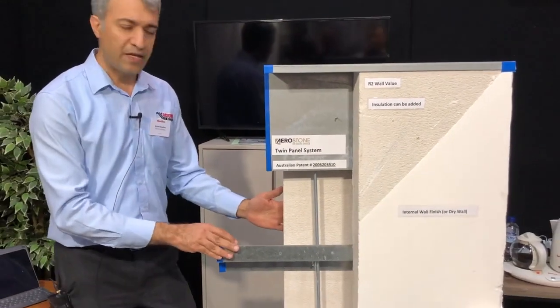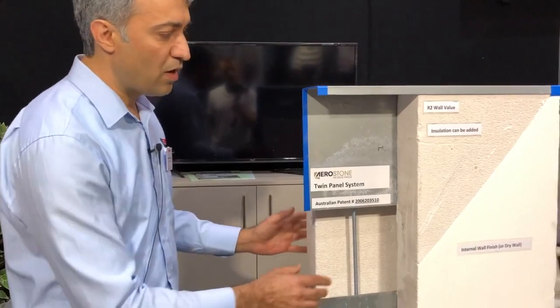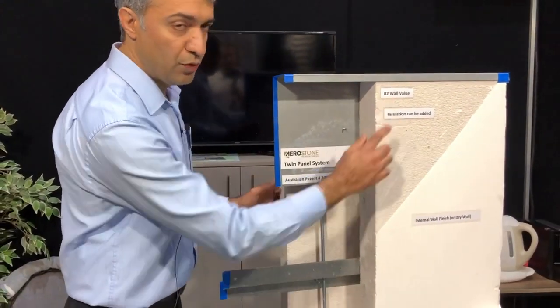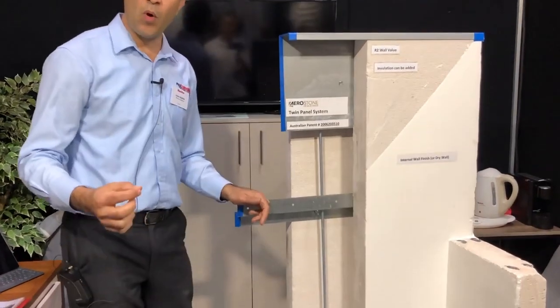From the outside, you can have acrylic render or you can have roll-on paint. The R-value on this system is R2. The R-value on a normal masonry system with double brick is 0.68.